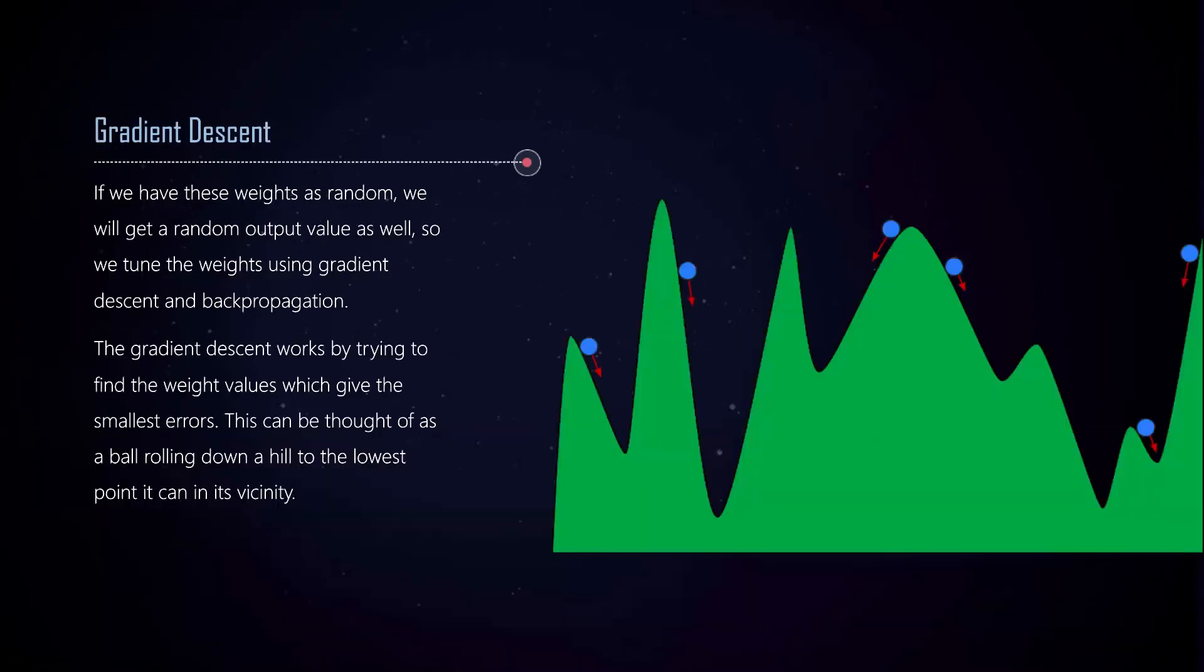This method is a little complicated but can be thought of as just rolling down balls on a hill. Due to gravity, a ball higher up on the hill would roll down to the lowest point in its vicinity. We can assume that the location of the ball on the X axis corresponds to the weight value, and the height of the ball would correspond to the error it has in the final output.